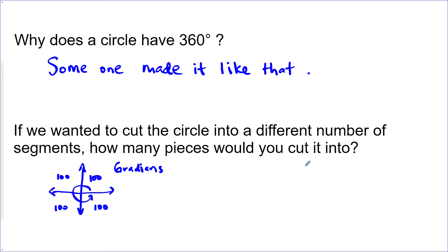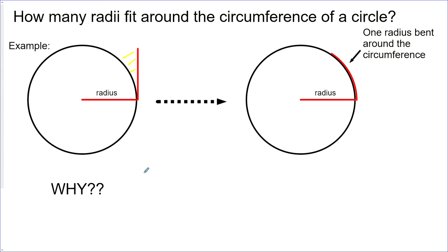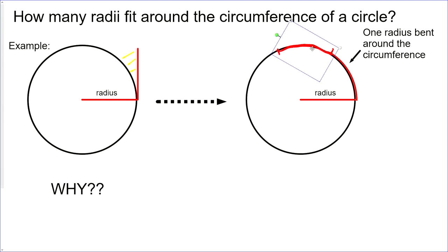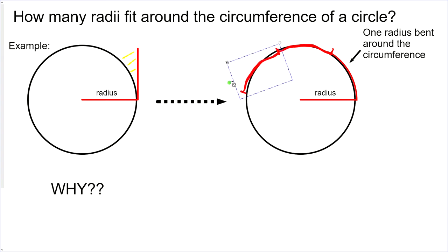So how many pieces would you cut a circle into? How many radii fit around the circumference of a circle? This is fun to do. Get anything that's circular — like a cup or garbage can, whatever you have that's round. Measure the radius, and then try to see how many radii fit around the outside. Take the radius and sort of bend it around the circumference. We'll just move it around and go all the way around the circle, arranging as many radii as will fit.